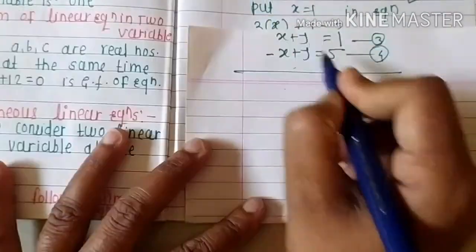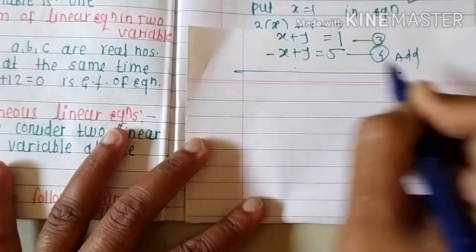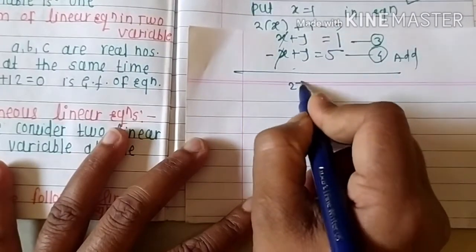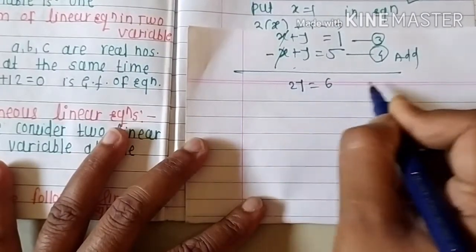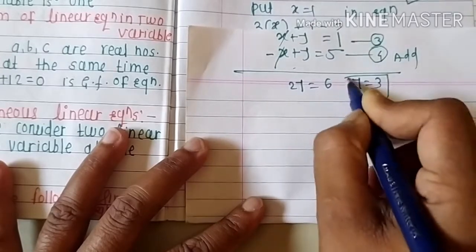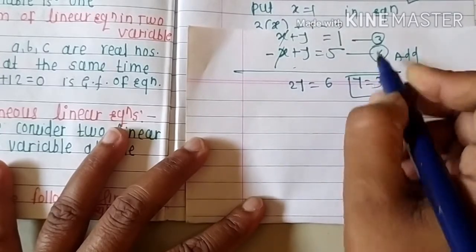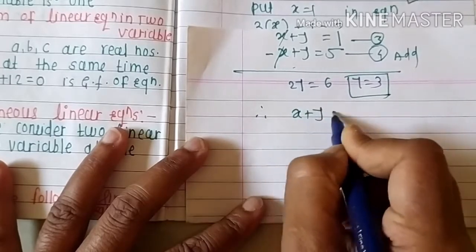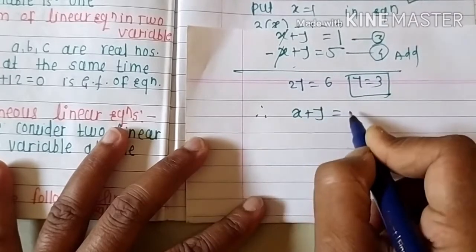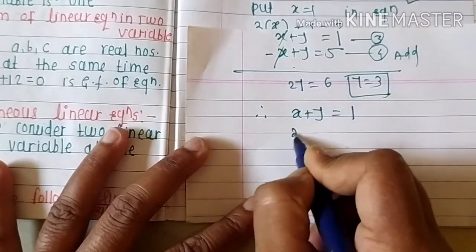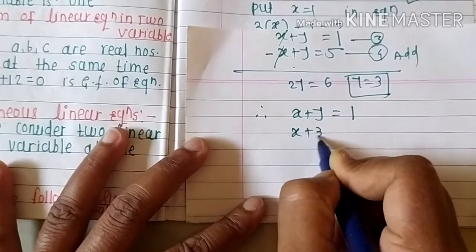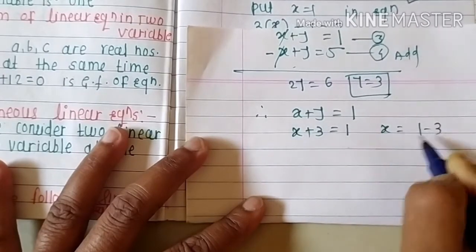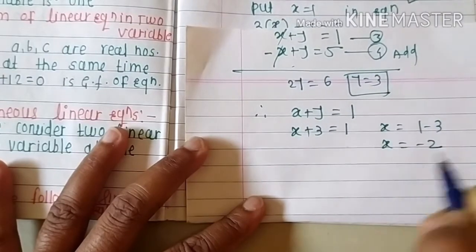Solving equations three and four by addition: x and minus x cancel, giving 2y equals 6, so y equals 3. Substituting y equals 3 into equation three: x plus 3 equals 1, giving x equals 1 minus 3, so x equals minus 2.